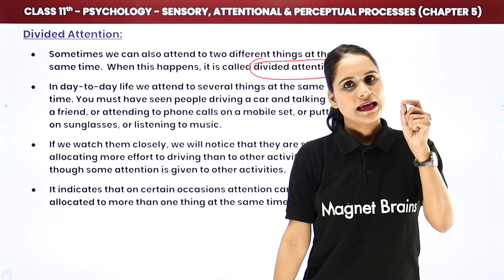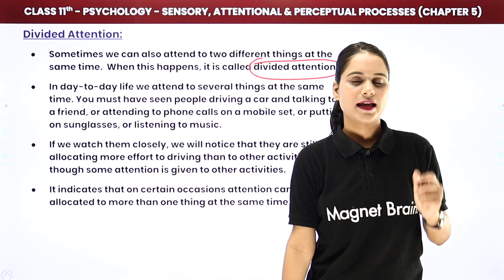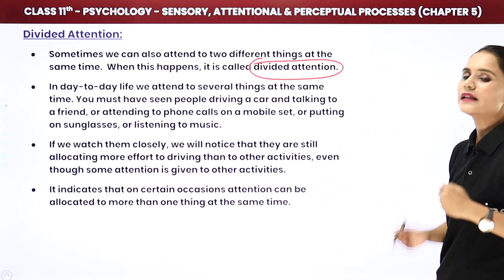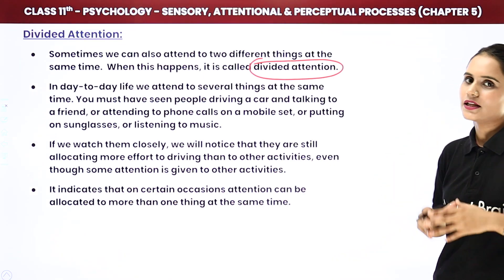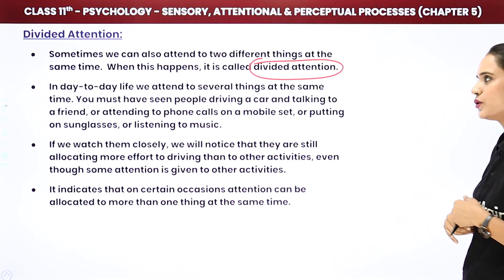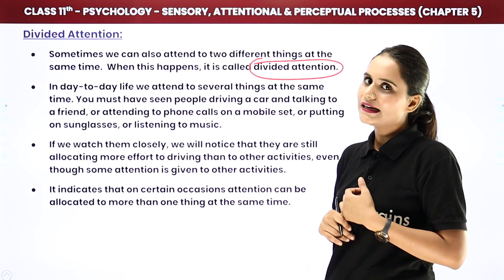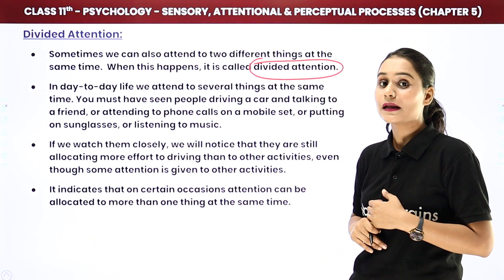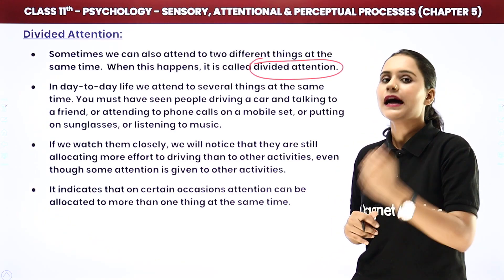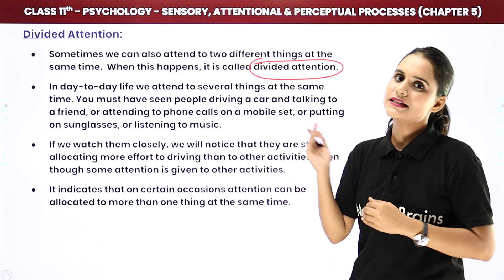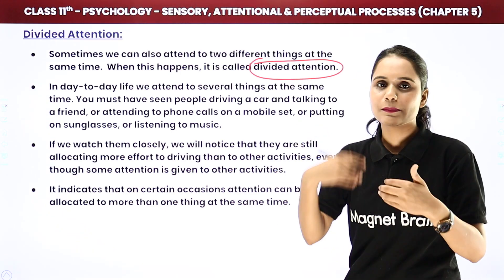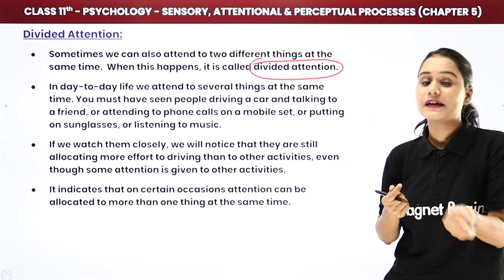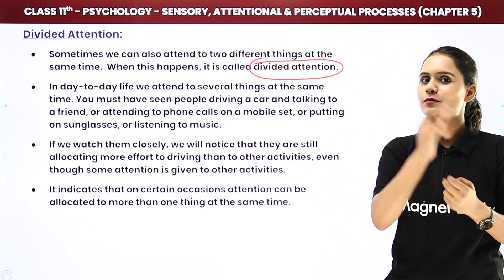Generally, we can only attend to one thing at a time, but sometimes, in some rare circumstances, we can pay attention to two things as well. In our day-to-day life, we very often do divided attention — meaning we are able to pay attention to more than one thing at once. Until now, what we had read was that you can pay attention to only one thing at a time, and then at another time you attend to another thing.